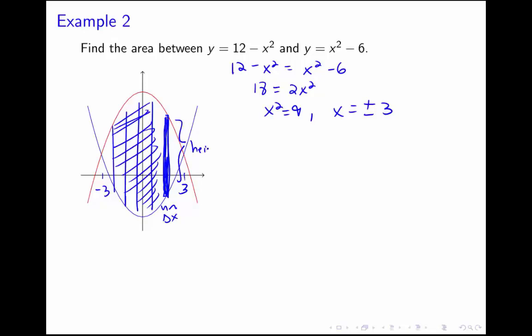It looks like the height of my rectangle would be this red curve, which should be the 12 minus x squared—that's the parabola that's opening downward versus upward—minus this blue curve here, which is x squared minus 6. So it looks like our area will be an integral from negative 3 to 3 of 12 minus x squared minus x squared minus 6 dx.